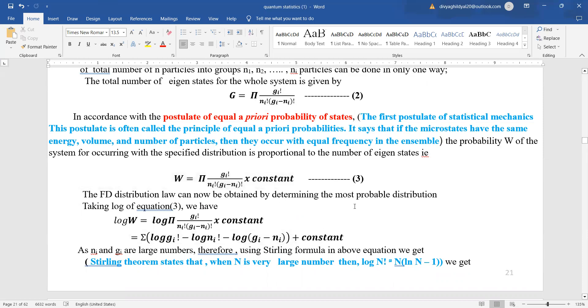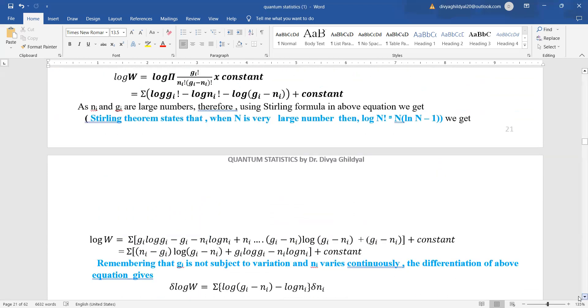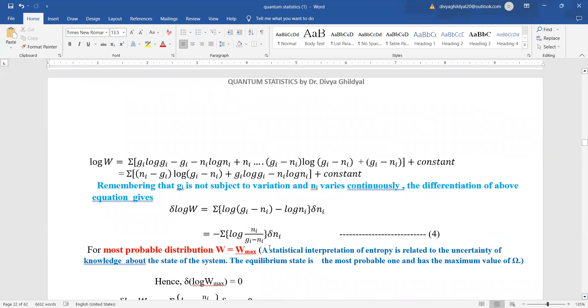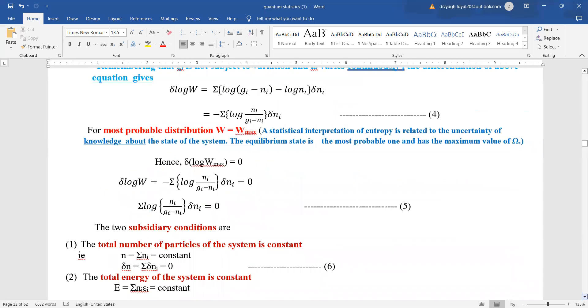Now, the Fermi Dirac distribution law can be obtained by the most probable distribution function. What will we do? We will take log on both sides and after that apply Stirling's formula which states that when n is very large, then log n factorial is equal to n log n minus 1. So applying this formula, we get the formula for the most probable distribution.